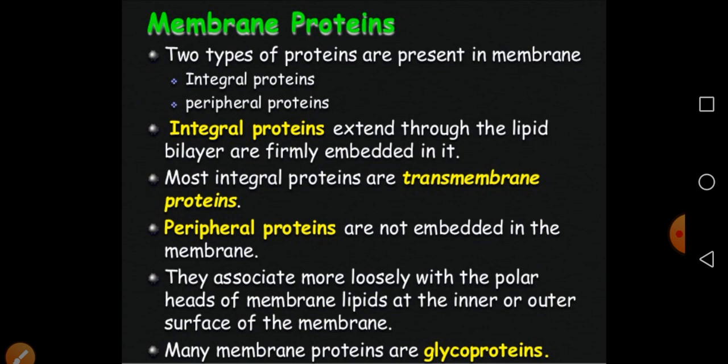Now we are going to discuss the proteins present in the membrane. There are two types of proteins: integral protein and peripheral protein. Integral protein means those proteins completely buried or completely embedded in the membrane or lipid bilayer — also called intrinsic protein. The other type is the extrinsic or peripheral protein, which is only partially buried in the membrane.